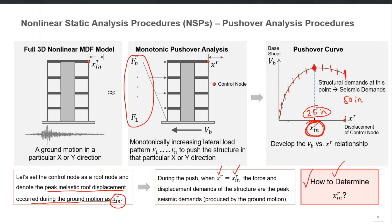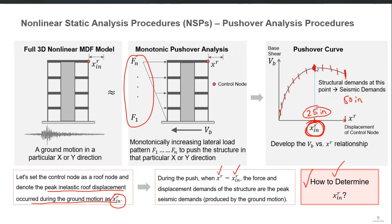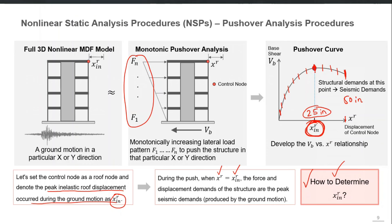We come back to the pushover case and extract the results only for that particular step of analysis — when my roof displacement was, say, 25 inches. All the responses at that step — story shear, moment, and individual component responses — now represent the responses which the future earthquake would have produced. That's how we approximately determine the seismic responses from pushover analysis without performing nonlinear dynamic analysis.